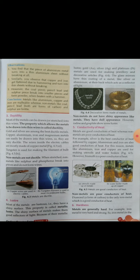Luster means shining nature. Most of the metals are lustrous — they have a shiny surface. This property is called metallic luster. The shiny surface of metals makes them good reflectors of light, because when light falls onto a shiny object, it reflects back. Gold, silver, and platinum metals are used for making jewellery and decorative articles because of their metallic luster.